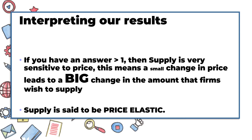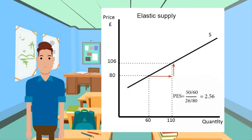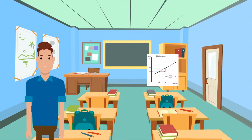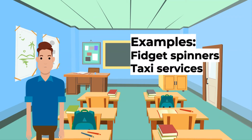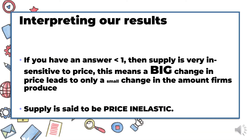Supply is said to be price elastic. In this example of elastic supply, a price rise of 33% has led to an 83% increase in quantity — the PES is 2.56. Examples of these types of goods are usually easy to manufacture or increase supply, such as fidget spinners and taxi services.